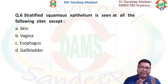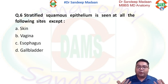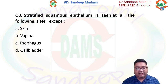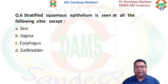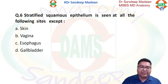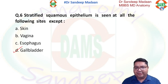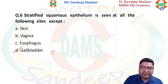Next question: stratified squamous epithelium is seen at all except which? Stratification is needed at openings. Skin is present outside; vagina is an opening; the esophagus is in continuity with the oral cavity and is also lined by stratified squamous epithelium. However, the gallbladder is lined by simple columnar epithelium with a striated border — that is the special feature there.